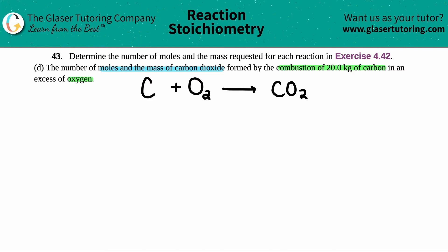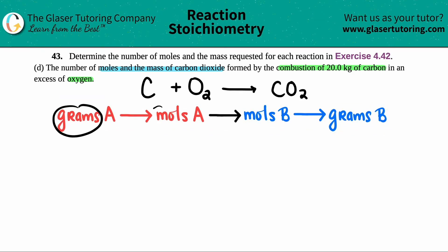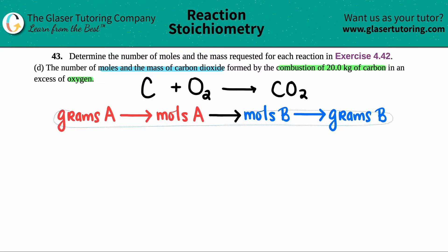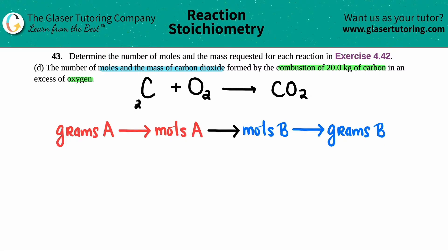The second part is to write a little roadmap for stoichiometry. The roadmap always comes from this idea: you can go from one compound or element to another by doing grams to moles to moles to grams. Your starting material is labeled A and the one you want to find is B. We're going to cater this to what we have. The only number given is 20.0 kilograms of carbon, so I write it under the C.